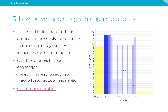Chapter 3 focuses on low-power app design through radio focus. Depending on whether you choose LTE-M or narrowband IoT, the transport protocol such as UDP or TCP, the application protocol, the data transfer frequency, and the payload size — all of those factors influence power consumption. In cellular, there is an overhead for each cloud connection: you need to start the modem, connect to the network, and you may have application protocol headers, transport headers, security, etc.